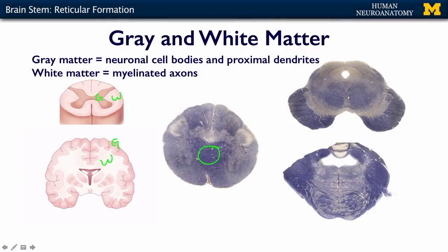Here's some white matter. I want to draw your attention to the fact that these three sections are stained with a myelin stain, so the myelin looks dark and the gray matter looks light — it's kind of flipped. But the bottom line is, here's a bunch of fibers, here are some cell bodies, here's a whole bunch of cell bodies around the cerebral aqueduct, here's a great big bundle of fibers, and then you can see there are cell bodies all over the place in here with fibers interspersed.